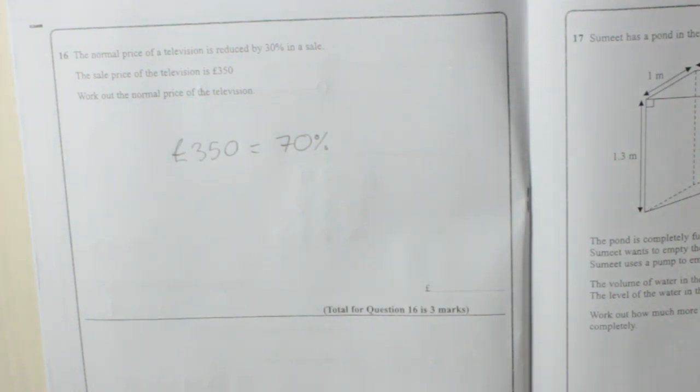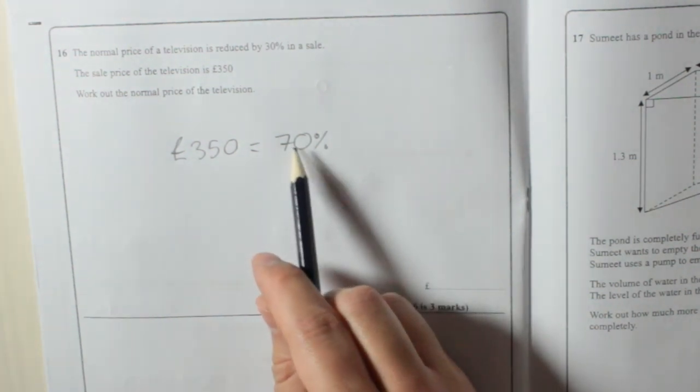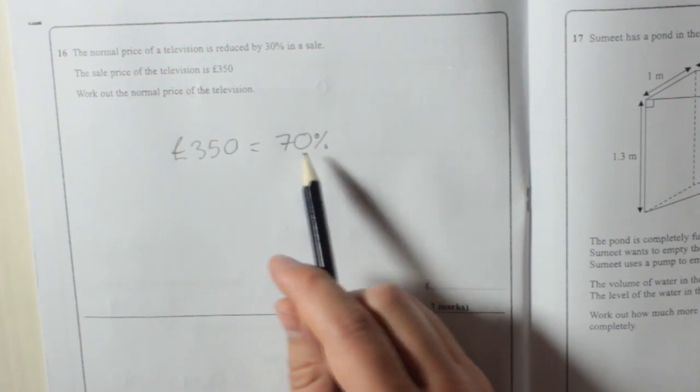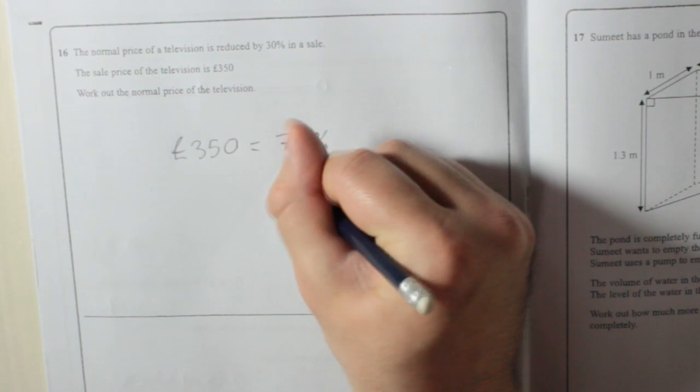We want to find the normal price. Basically, that means we want to find out what 100% is. That's 70%. You want to get from 70% to 100%. It's not like you can double it. 70% doesn't go into 100%. So what we can do is work out what 10% is.